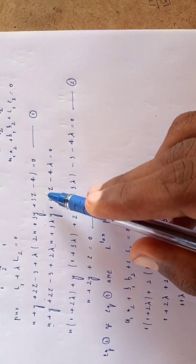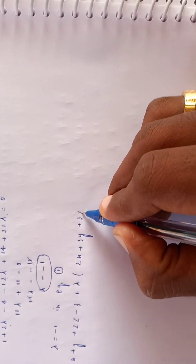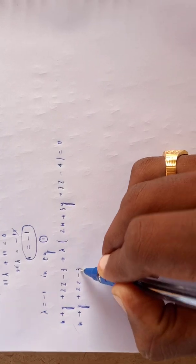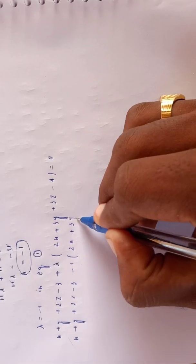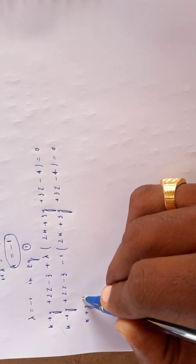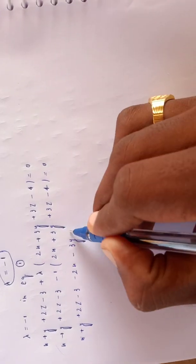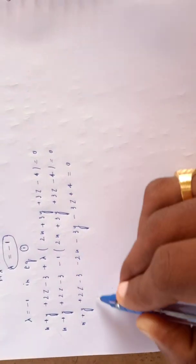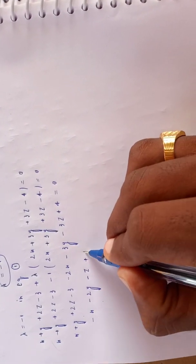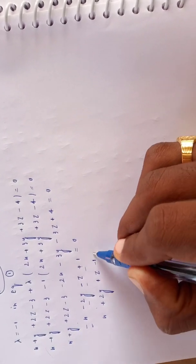Substituting λ = -1 into equation number 1: (x+y+2z-3) + (-1)(2x+3y+3z-4) = 0. Expanding: x+y+2z-3 - 2x-3y-3z+4 = 0, which gives -x - 2y - z + 1 = 0, or x + 2y + z - 1 = 0. This is the second plane of the SD line.